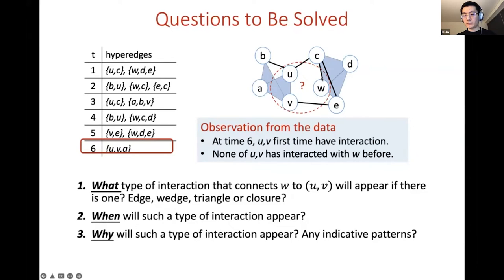Second we also want to predict when a type of interaction will happen if there is one. And third we expect our model to provide a certain level of model interpretation. So basically we want to find the most indicative patterns for our model to make such prediction.